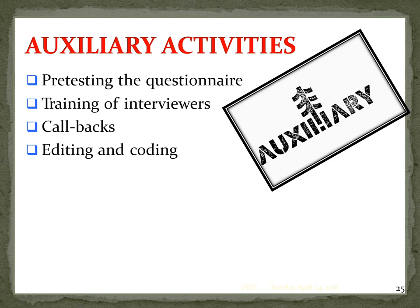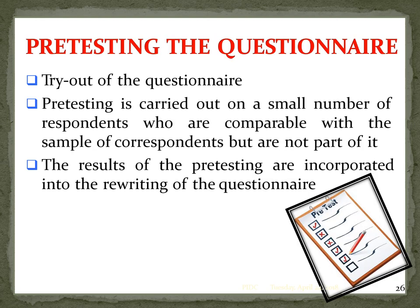Ancillary activities include pre-testing the questionnaire, training of interviewers, callbacks, and editing and coding. Pre-testing is a try-out of the questionnaire, carried out on a small number of respondents who are comparable with the sample but are not part of it. The results of pre-testing are incorporated into rewriting of the questionnaire.